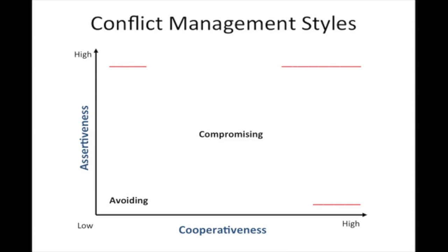With the avoiding style, we don't wish to maintain a relationship with the person and we don't wish to win. This may be necessary when socio-emotional or negative conflict is extremely high, but the problem is it doesn't resolve the conflict and may produce long-term frustration. In essence, we say we don't care about you or the issue at hand, and walk away.